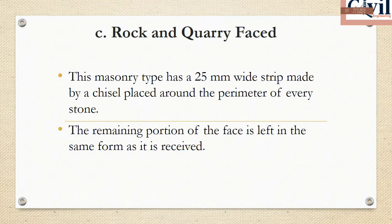Next is Rock-faced masonry. In this method, a rough type of finish is used on the face. Strips are placed around the edges. The remaining portion is left either fine or rough in projection form.